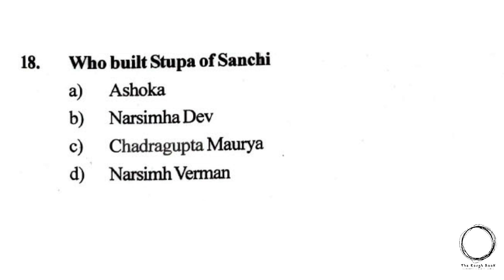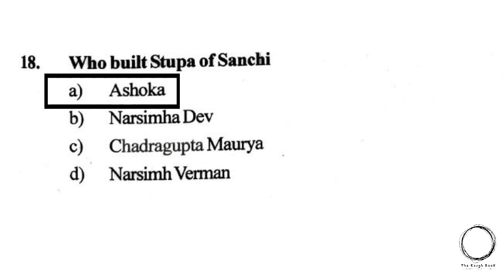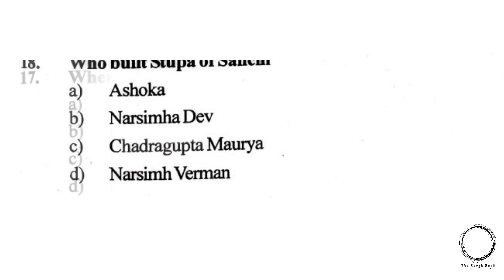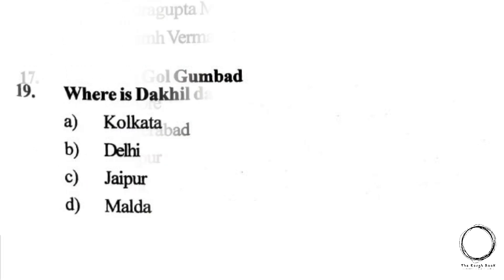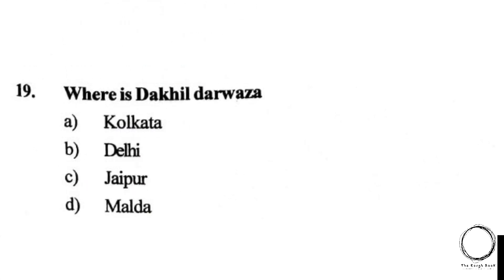Next: who built the Stupa of Sanchi? Options: A) Ashoka, B) Narasimha Deva, C) Chandragupta Maurya, D) Narasimha Varma. The right answer is A, Ashoka. Next: where is Dhakil Darwaja located? Options: A) Kolkata, B) Delhi, C) Jaipur, D) Malda. The right answer is D, Malda.